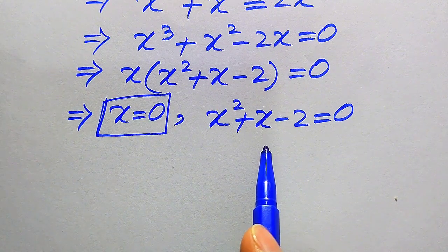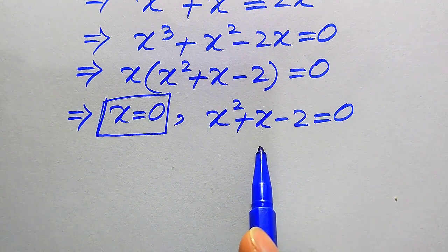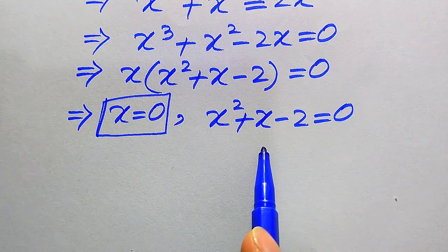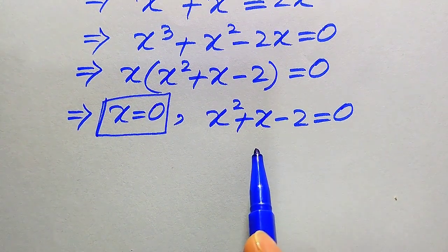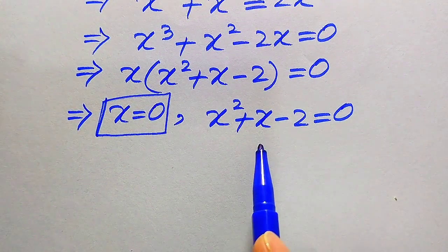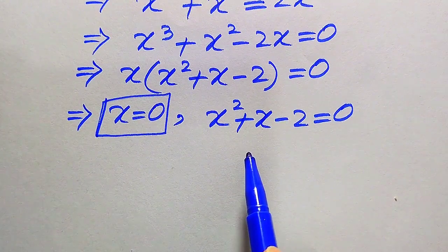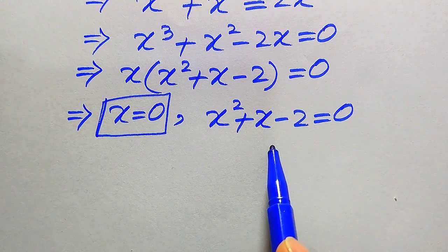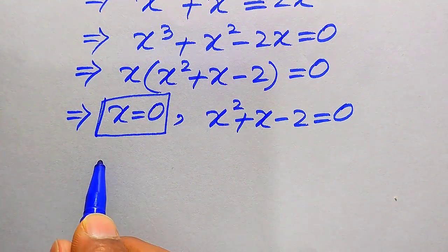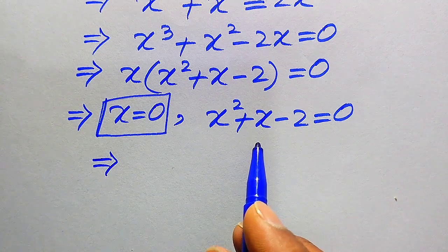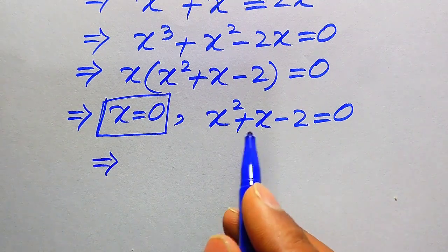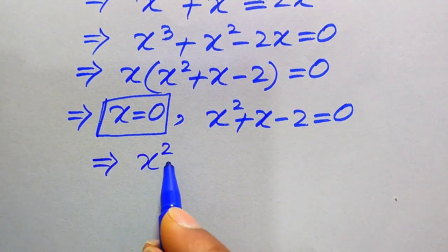Here we use the factorization technique to make the factors of this equation. We need to break its middle term. The middle term is +x, and we write it as x² + 2x − x − 2 equals 0.